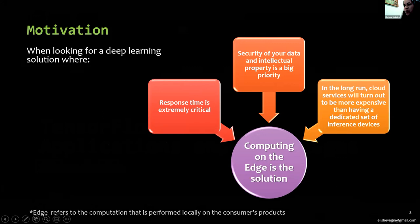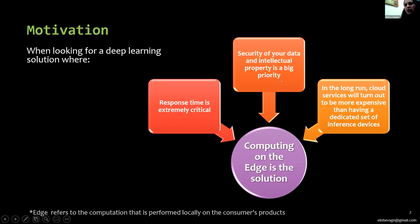A computer on the edge is the best option if response time is extremely critical. Security of your data and intellectual property is a big priority in sample vaccine research and production. In the long run, cloud services may turn out to be more expensive than having a dedicated set of inference devices.